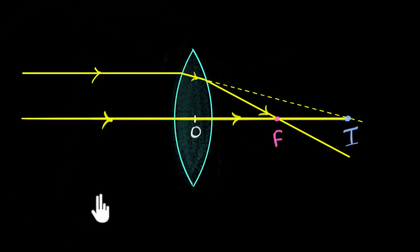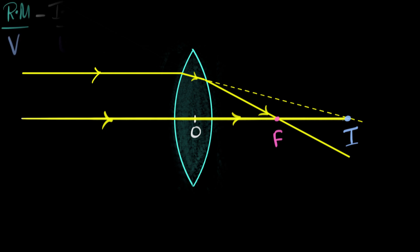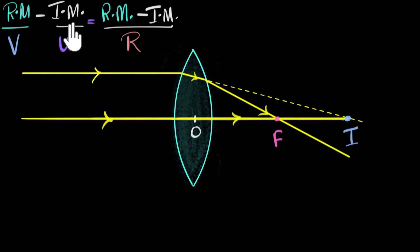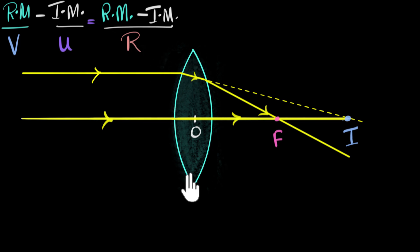Since we are dealing with refractions at curved surfaces, we'll use — no surprise — the curved surface formula. In this formula, Rm is the refractive index of the refracted medium (the medium containing the refracted ray), Im is the refractive index of the incident medium, V is the image distance, U is the object distance, and R is the radius of curvature. Since we have two surfaces, we'll apply this formula to each surface separately.